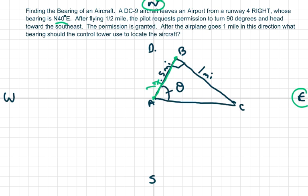This is 40 degrees, east of north. Now at part B, he decides to turn 90 degrees and head towards the southeast, so east of south. That's one mile he goes, and now we need to know what bearing should the control tower use to locate the aircraft.